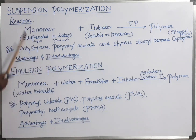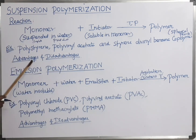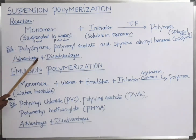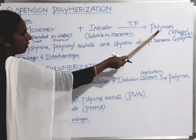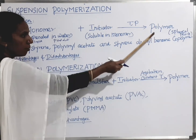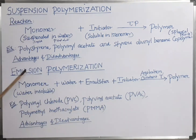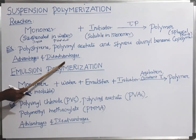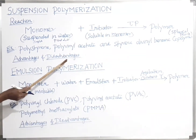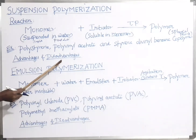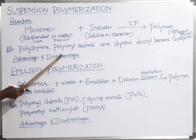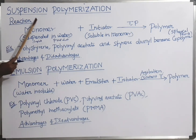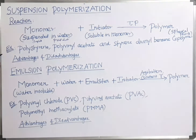Advantages of suspension polymerization: water is used as a solvent, making this a cheap technique. The polymer obtained is easily isolated because it is insoluble in water. Disadvantages: this technique is highly sensitive to agitation, and the particle size of the polymer is very difficult to control.